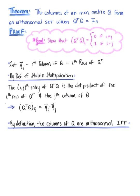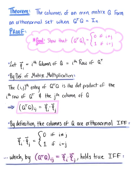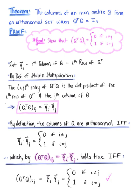We know by definition that the column vectors of matrix Q form an orthonormal set if and only if the dot product of vector q sub i with vector q sub j is equal to 0 if i does not equal j, and equal to 1 if i equals j. By the above equation, this holds true if and only if the i-th j-th entry of Q^T times Q equals 0 when i ≠ j and equals 1 when i = j — which is exactly what we're looking for. We have officially demonstrated that the columns of an n by n matrix Q form an orthonormal set when Q^T times Q equals the n by n identity matrix.